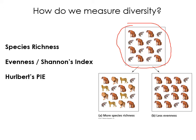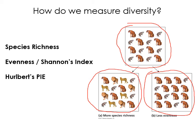Just as important as species richness is evenness. In panel B we have lots of tigers and just a few of another feline — that's not very even. In the even example we have 16 cats: four lions, four tigers, four cheetahs, and four of something else. We often use diversity indices to quantify both richness and evenness. Two common ones are Shannon's H and Hurlbert's PIE.